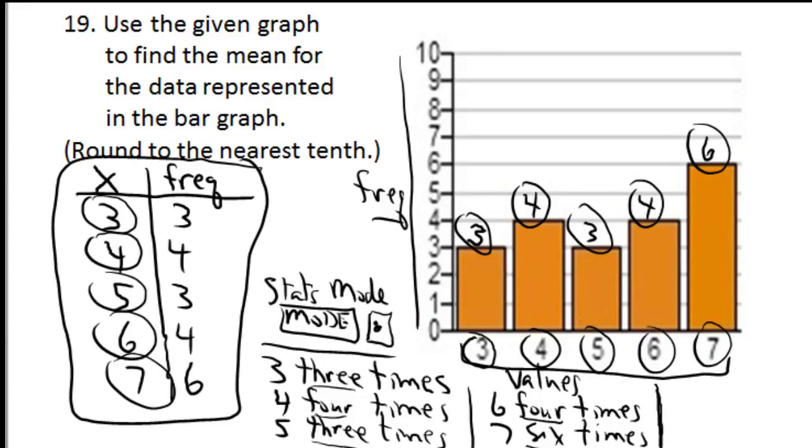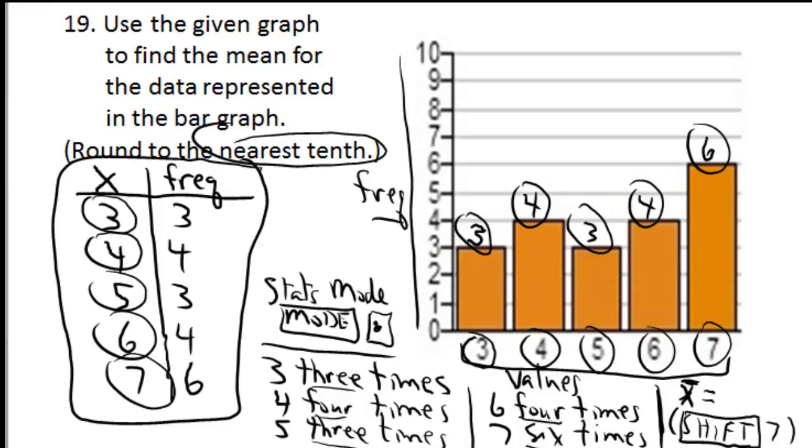The mean, using shift 7 on your calculator and rounding it to the nearest tenth, comes out to be 5.3.